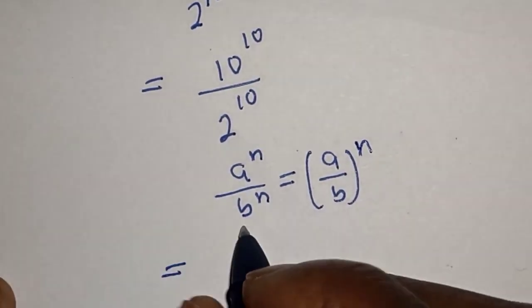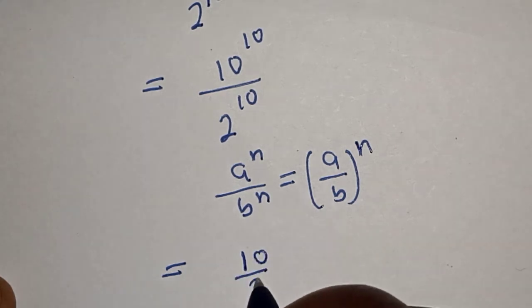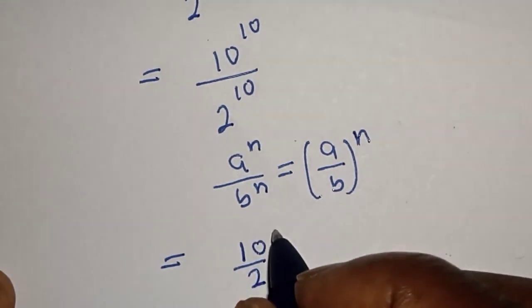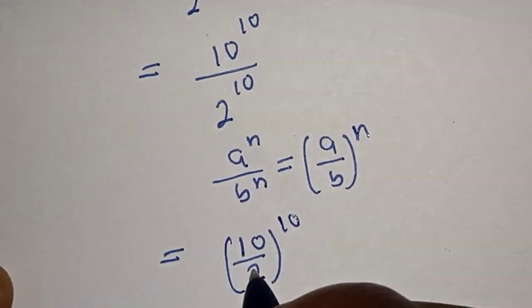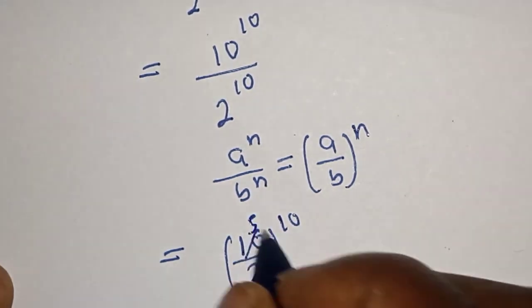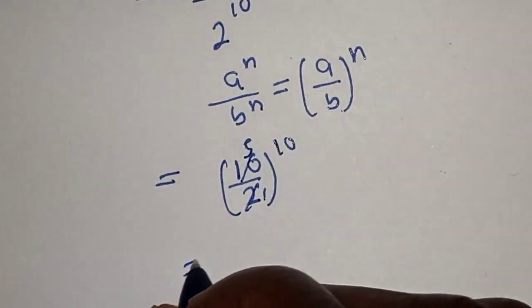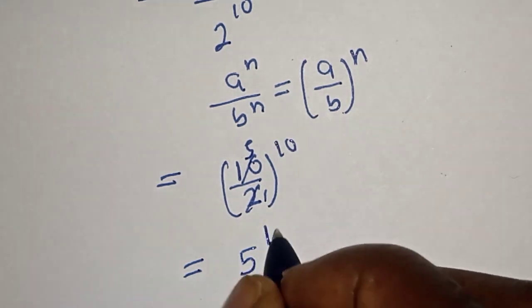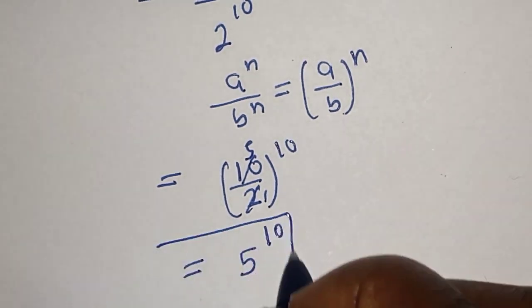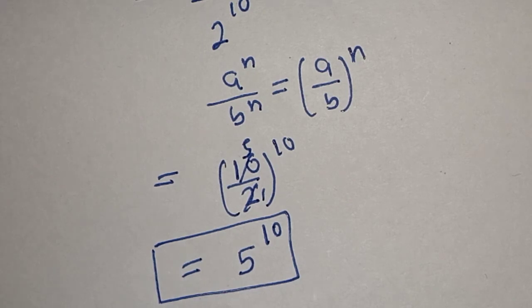Applying this rule, we get 10 over 2, raised to power 10. Simplifying 10 over 2 gives us 5, so this is equal to 5 raised to power 10, and that is our final answer.